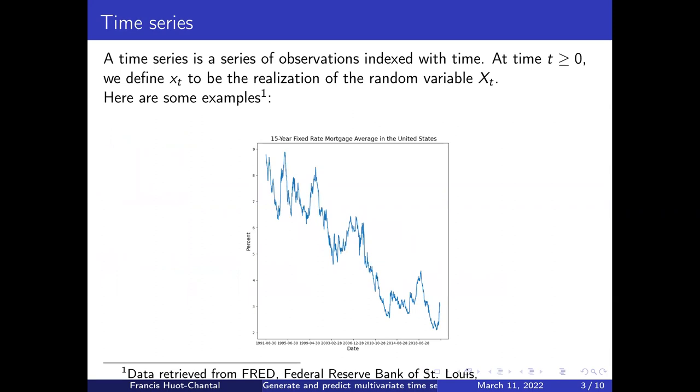First, what is a time series? Simply put, it is a series of observations indexed with time. At time t, we can define xt to be the realization of some random variable, capital Xt. I'll give some examples of observed time series. There are multiple applications in every domain. I've chosen to focus on econometric examples. Here we have the 15 year fixed rate mortgage average in the US. At every single point in time, we can see that the observed value changes in the graph.